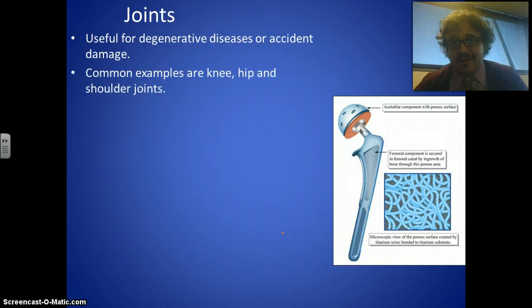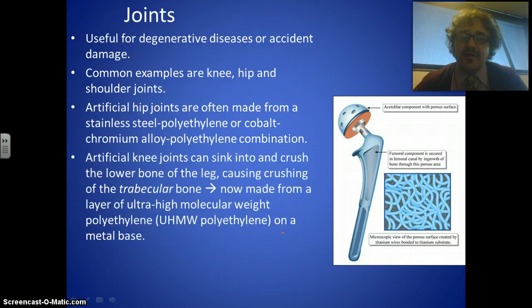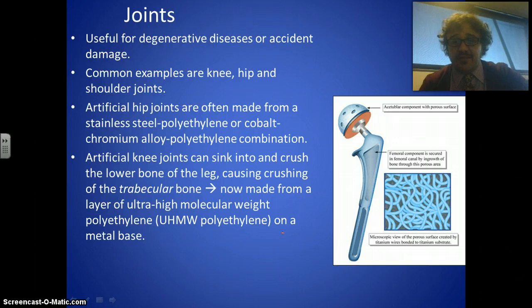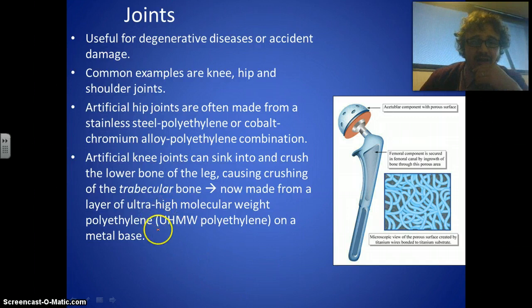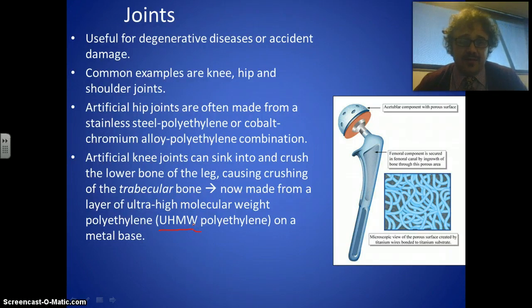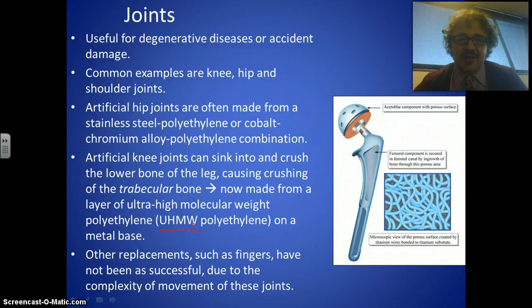We replace joints with biomedical devices when there's degenerative disease or damage from an accident. The most common are knee, hip, and shoulder joints. Artificial hip joints are often made from a stainless steel and polyethylene combination, or a cobalt-chromium alloy and polyethylene combination. Artificial knee joints can sink into and crush the lower leg — the trabecular bone. They used to be made with just steel, but now they're made from ultra-high molecular weight polyethylene on a metal base. Smaller joints like fingers and ankles are much harder to replace due to their complex movement.